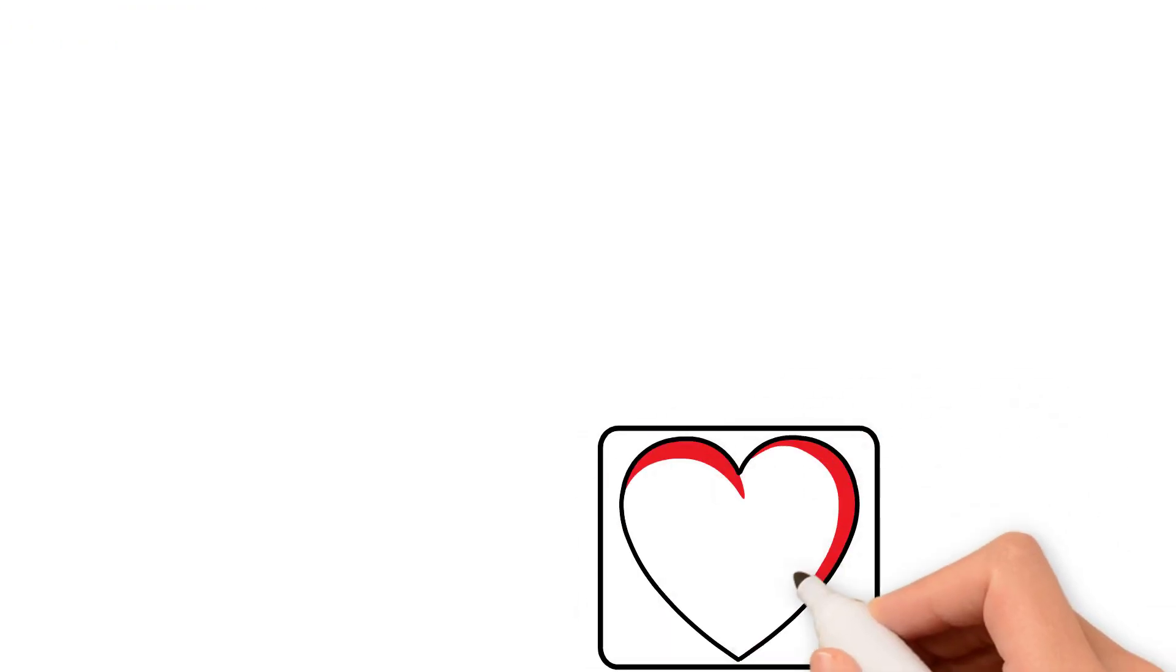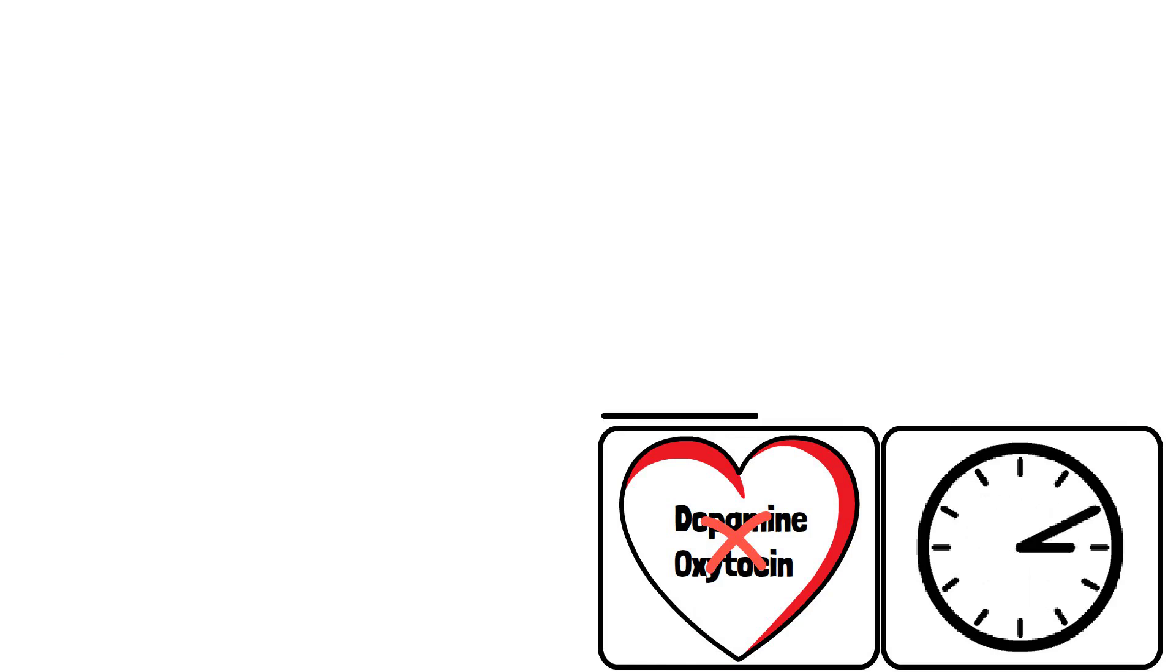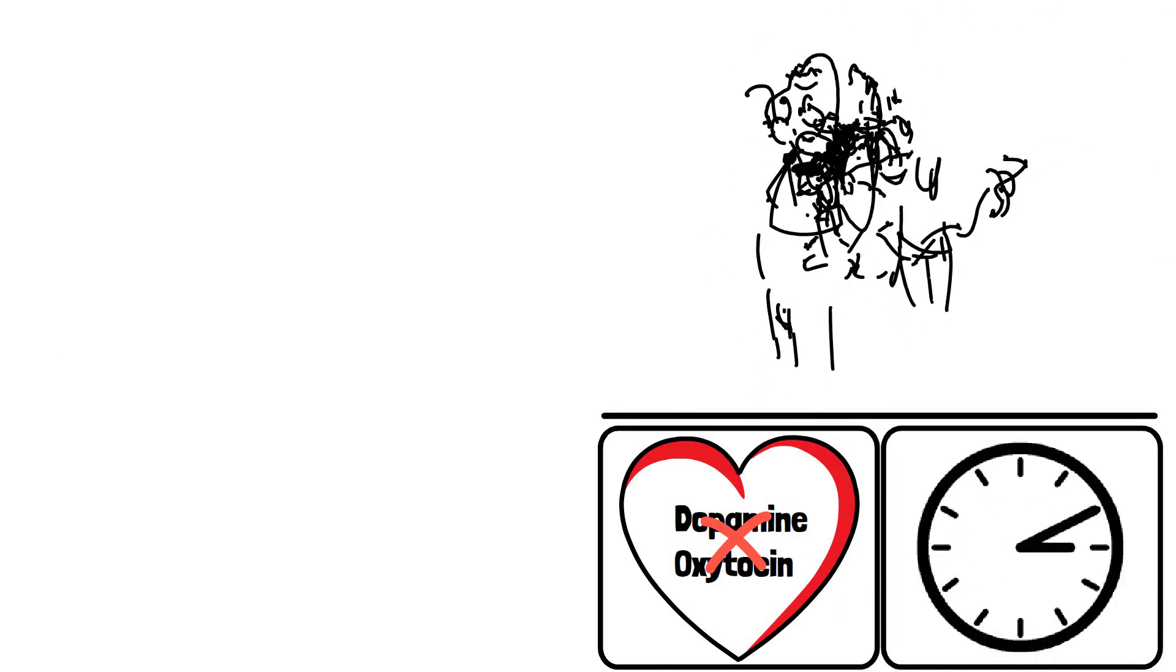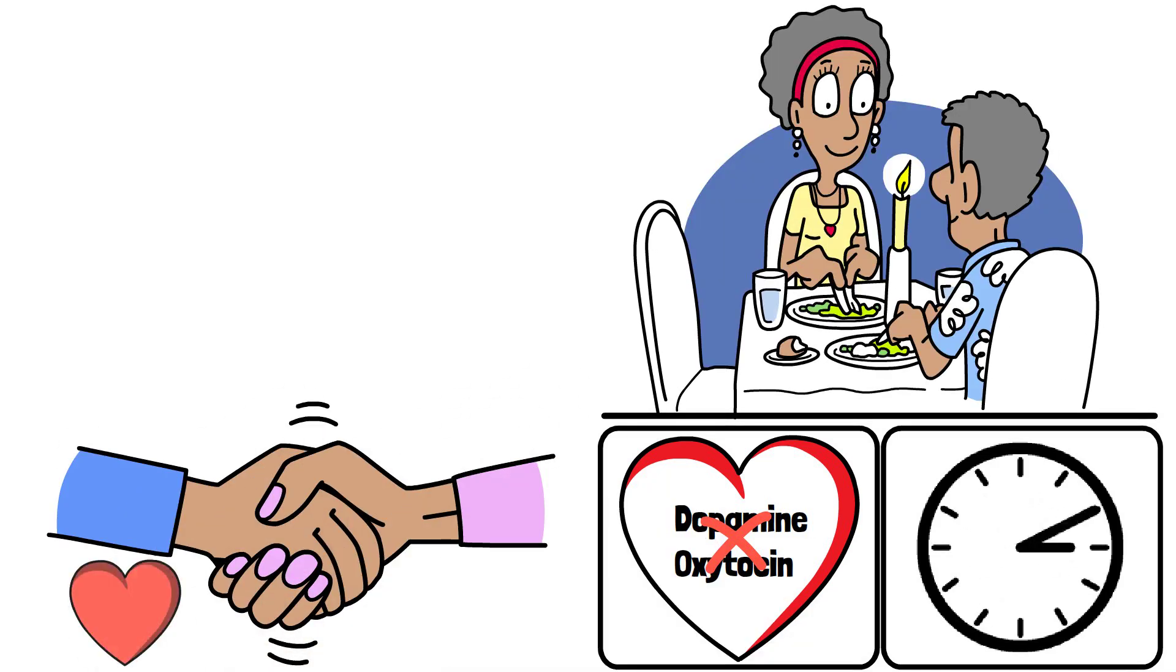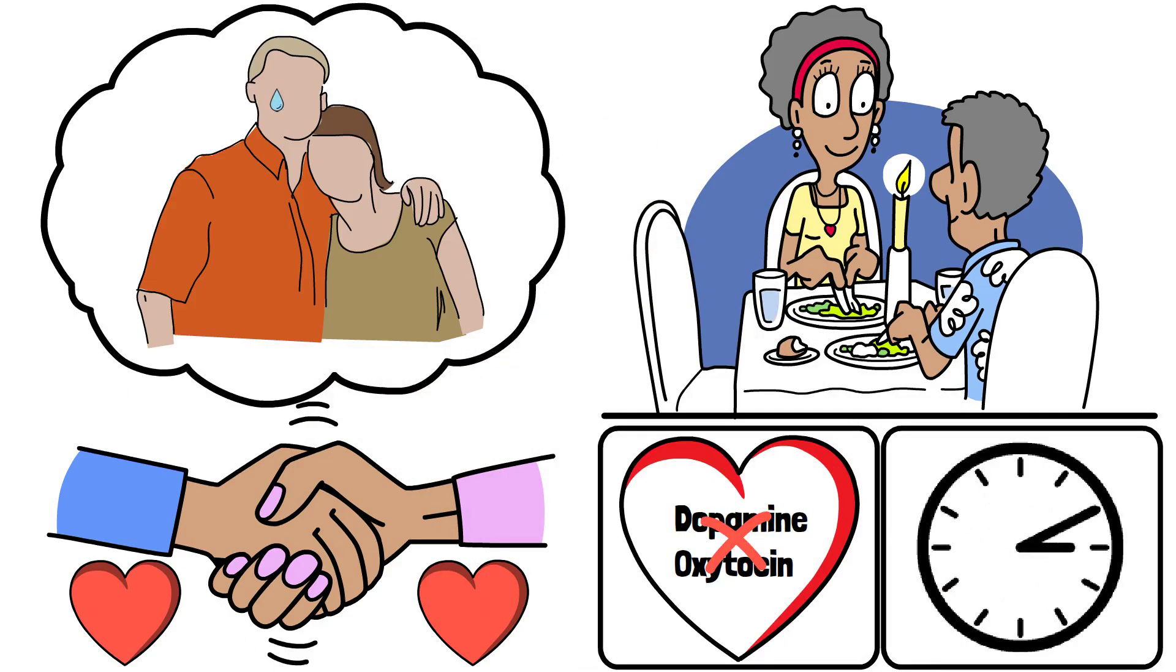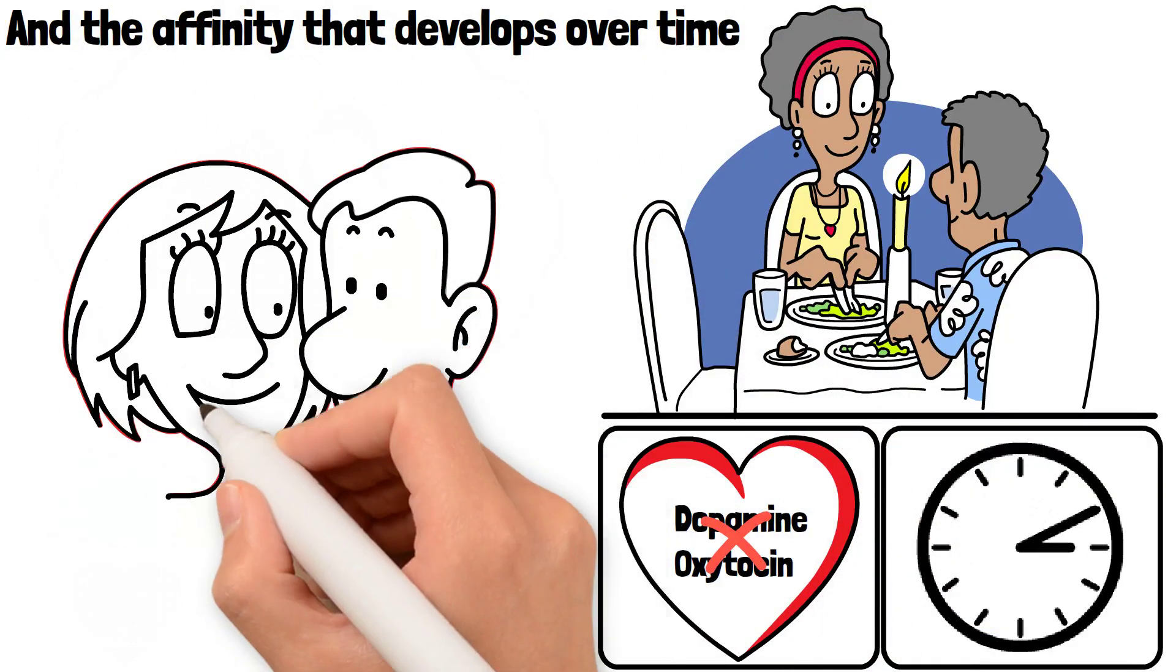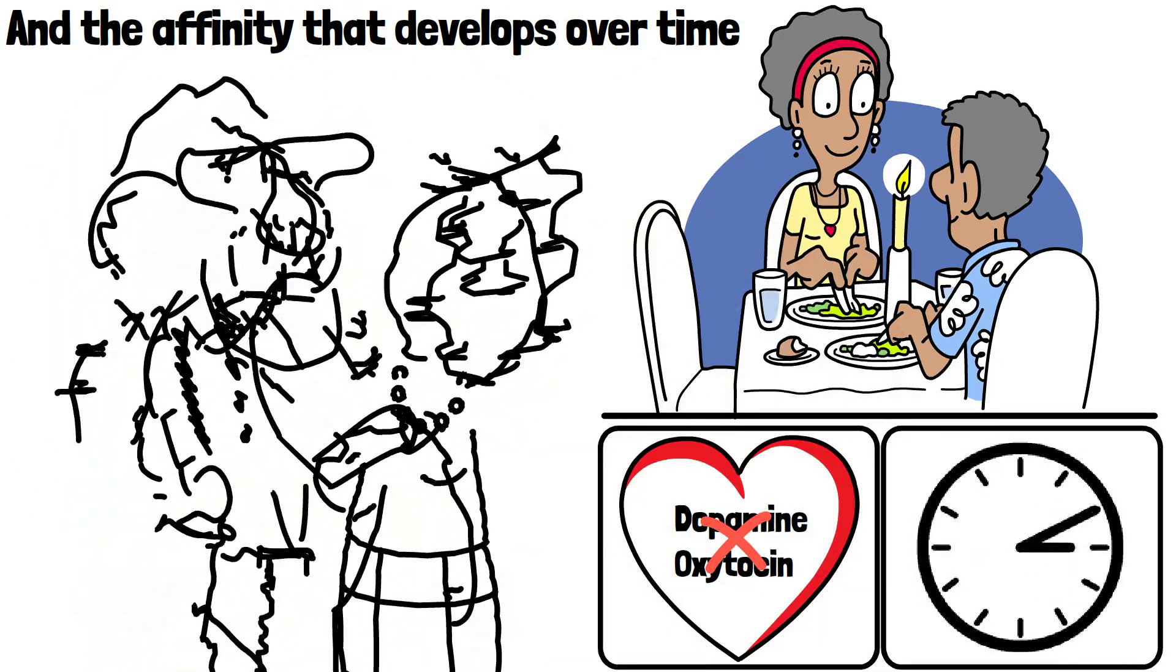But love isn't just about chemistry and neurotransmitters. Over time, love evolves. After the initial passion phase, love turns into a deeper and more lasting bond. The key to this change lies in mutual trust, emotional support, and the affinity that develops over time. This type of love, less passionate but more stable, is essential for a lasting relationship.